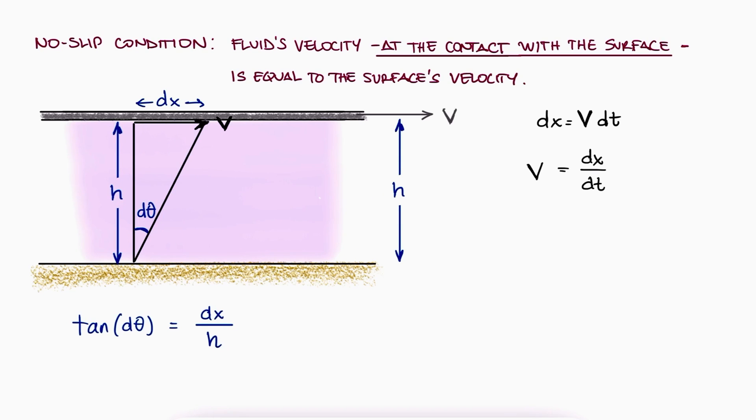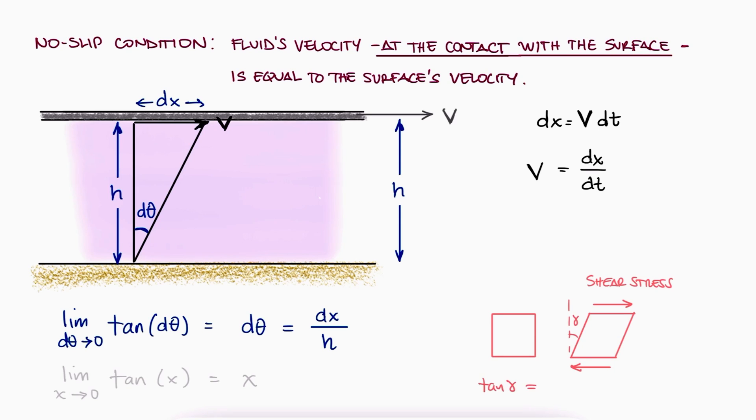From the triangle that we see here, we can state that the tangent of the bottom angle equals the opposite side dx over the adjacent side h. Since this angle dθ is very small, and the limit of tan(x) when x approaches zero is just x, then we can write dθ = dx/h. From mechanics of materials, the small angle change is what we defined as shear strain, gamma.